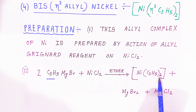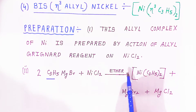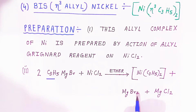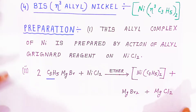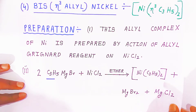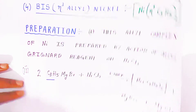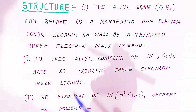Two molecules of allyl are forming the bond with the nickel and forming the complex. After the reaction, you get magnesium bromide and magnesium chloride as byproducts. This is our organometallic compound — this is how we can prepare the allyl nickel complex.